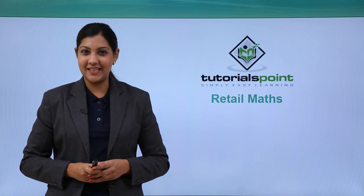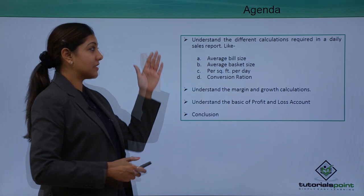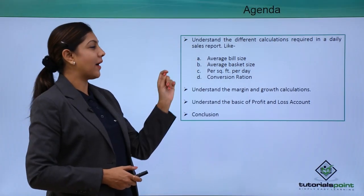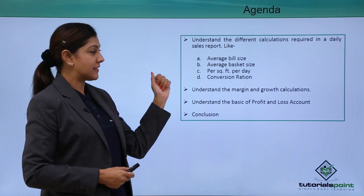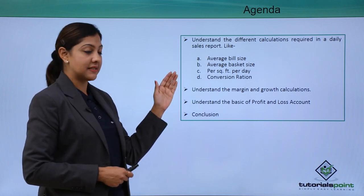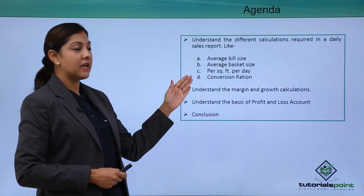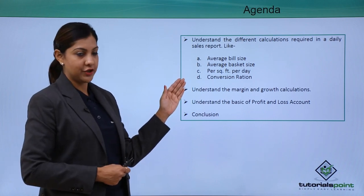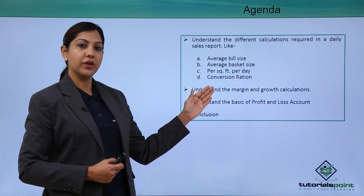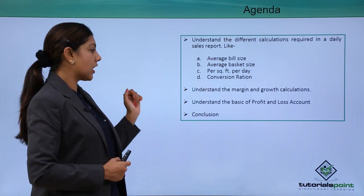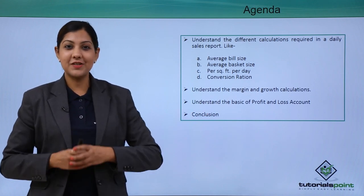Let's see what is on the agenda. We will talk about different calculations required in a daily sales report, like the average bill size, the average basket size, the per square feet per day concept, conversion ratio, the difference between margin and growth calculations, and the basics of the profit and loss account.